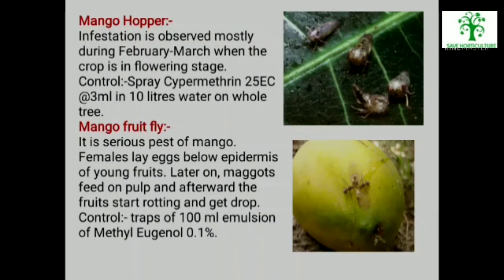Mango Hopper: Infestation is observed mostly during February to March when the crop is in the flowering stage. They suck from leaves and inflorescence. On infection, flowers get sticky and sooty mould — a black colour fungus — develops on affected parts. To control mango hopper, spray cypermethrin 25 EC at the rate of 3 ml in 10 litres of water on the whole tree.